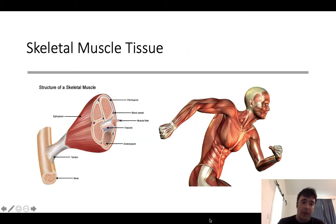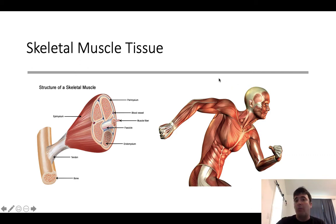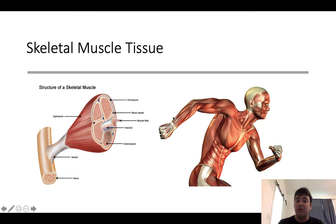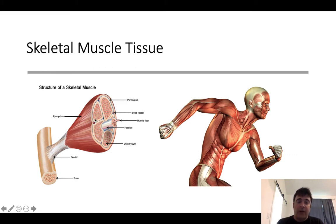Skeletal muscle tissue — macroscopically, we can see an entire skeletal muscle, and within your body you have over 650 skeletal muscles. Skeletal muscle tissue is considered a voluntary tissue because the message to contract ultimately originates in the brain. When you break skeletal muscle down, it's broken into bundles of muscle fibers called fascicles and then individual muscle fibers. We're just going over the histology of skeletal muscle right now.